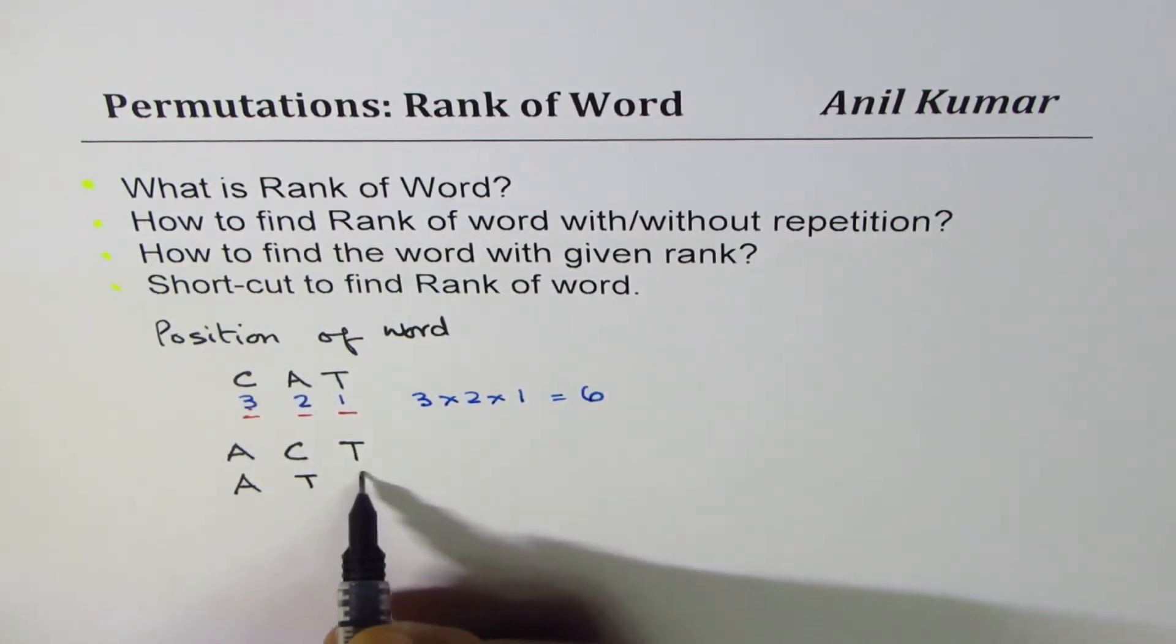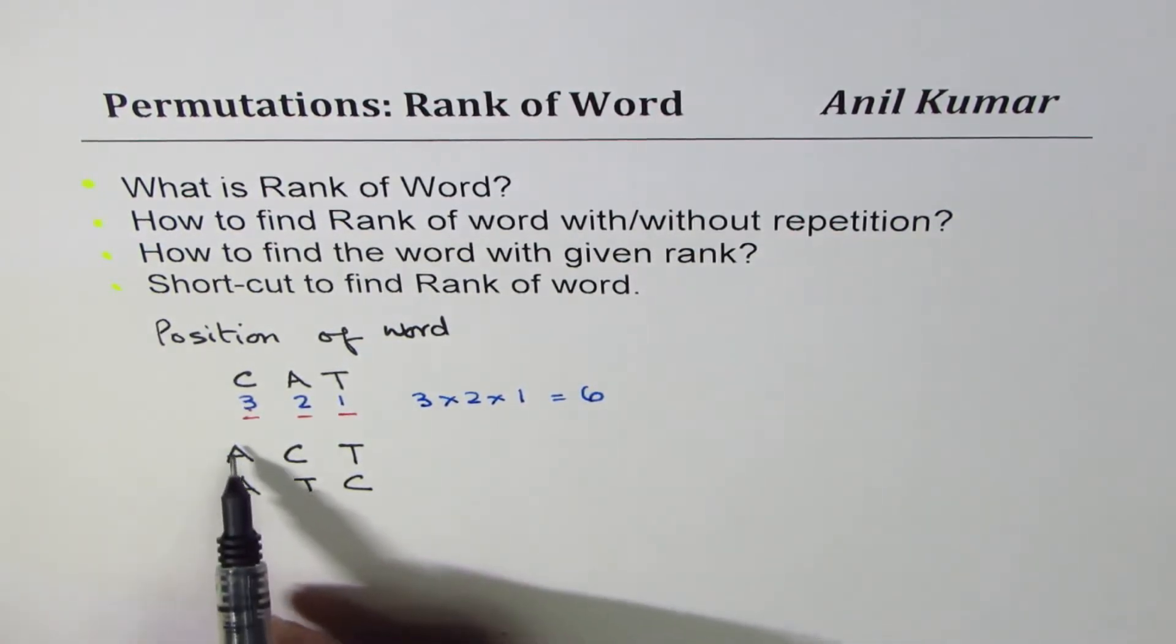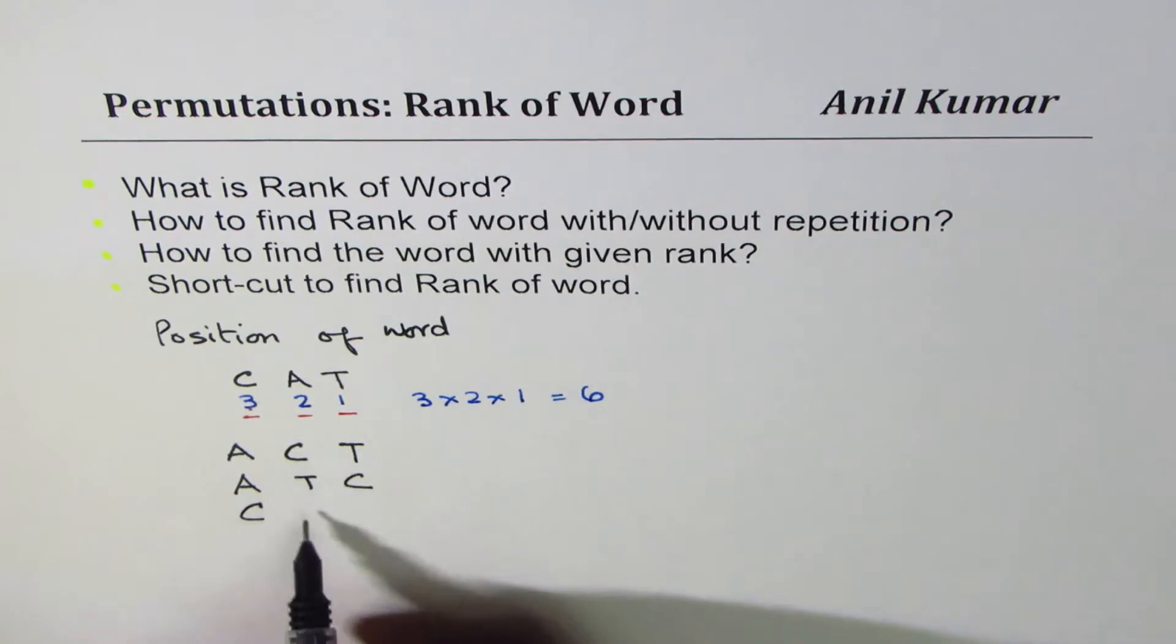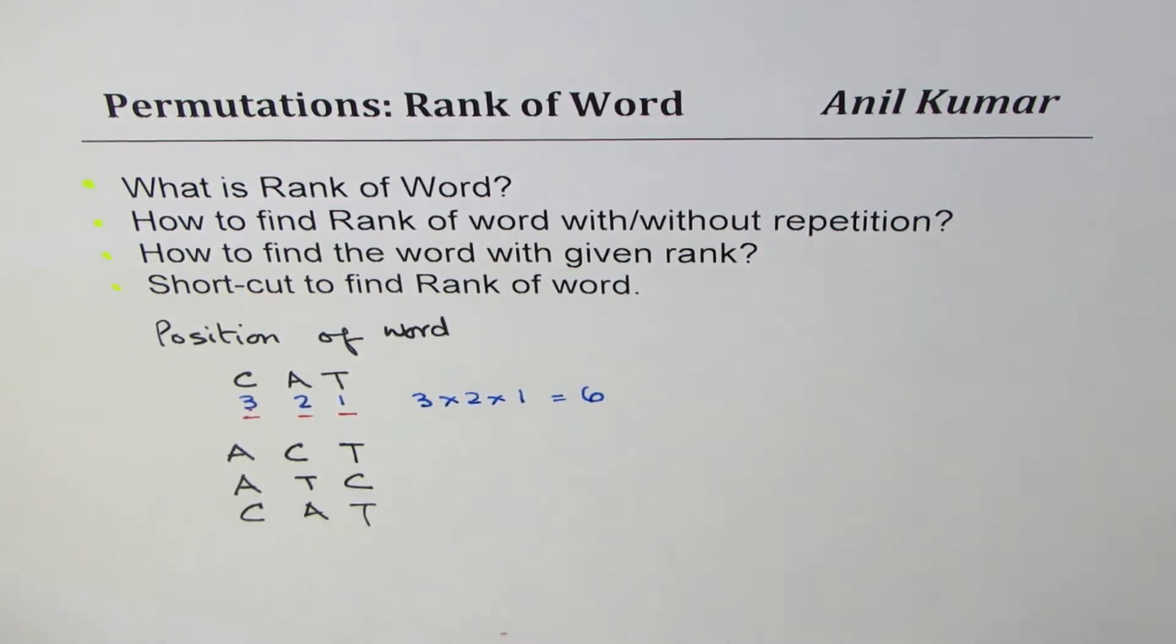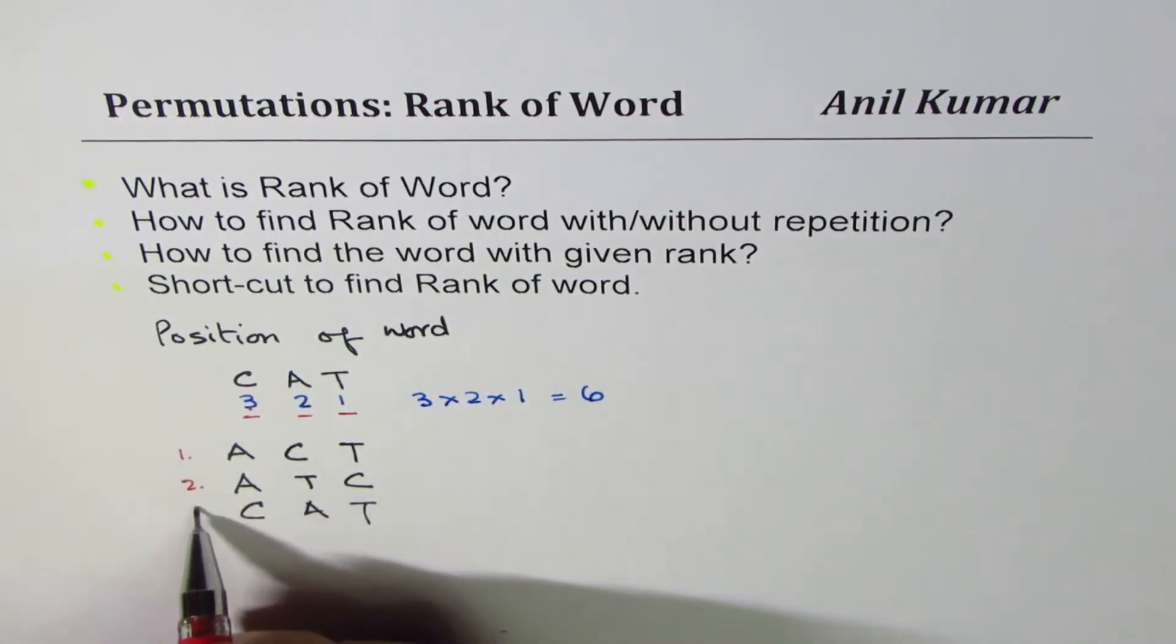That is not the word we are looking for. The other word could be ATC, correct. So two words done out of those six. Once we are done with beginning with A, we can start looking for words beginning with C. So we get CAT. Well that's the word we need.